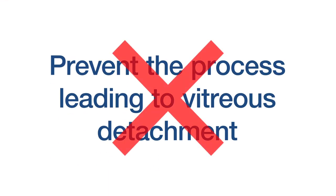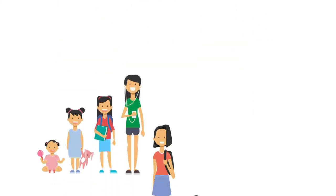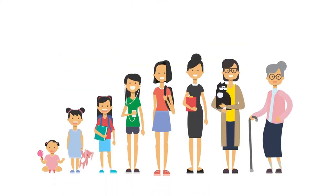There is no way to prevent the process leading to a vitreous detachment, as it's part of the natural aging process, with PVD being more common starting at around age 55 to 60.